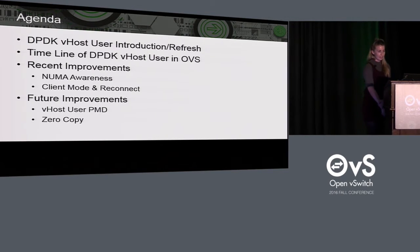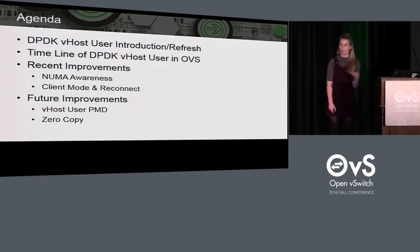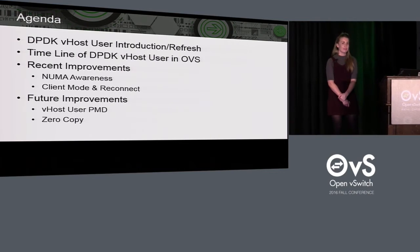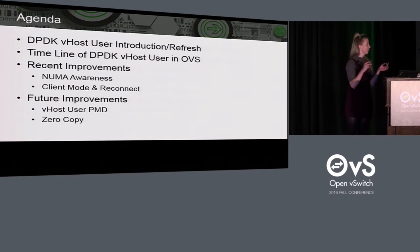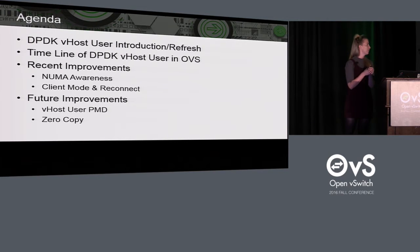On the agenda today, I'll begin with an introduction to DPDK vhost user for those of you who aren't familiar with it, and for those who are, you can consider it a refresh. Then we'll look at the timeline of vhost user in Open vSwitch — a high level overview of what vhost related features have been added to OVS and when. Then we'll go into more detail on recent improvements like NUMA awareness and client mode, and some potential future improvements like the vhost user PMD and zero copy.